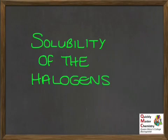This presentation considers the solubility of the halogens. By the end of the presentation, you ought to be able to compare the solubility of the halogens in polar and non-polar solvents, describe the appearance of solutions of the halogens in those two different types of solvent, and explain why the use of a non-polar solvent such as cyclohexane can help with the identification of halogens in aqueous solution.